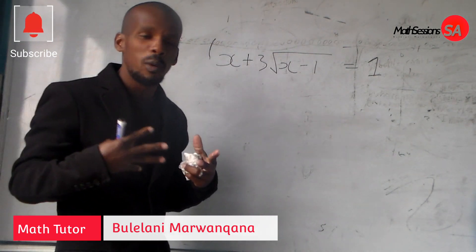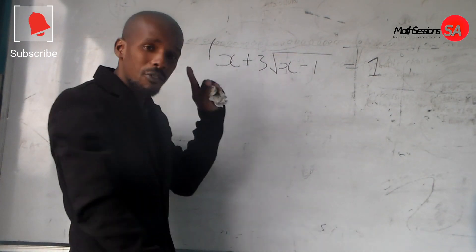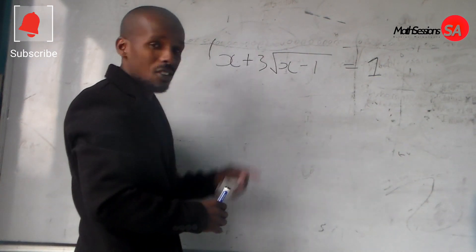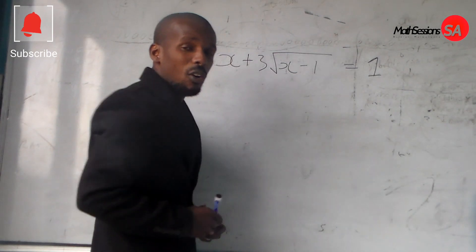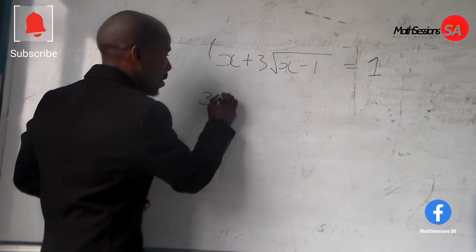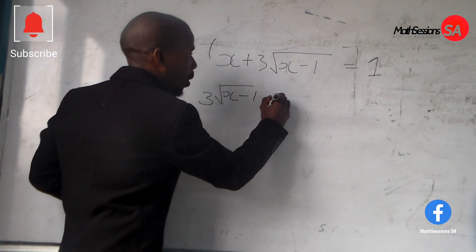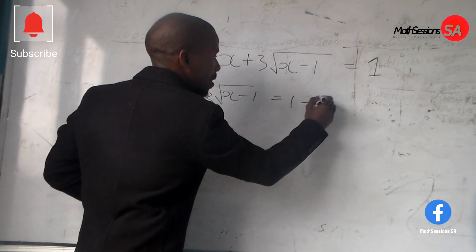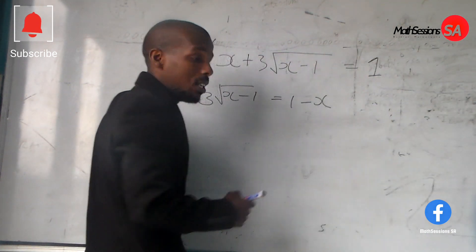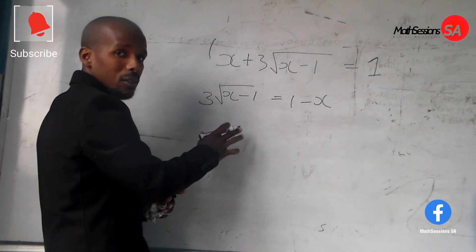First things first, we look for the problem. What is the problem with this equation? The first problem is this x right here. We take this x to the other side of the equal sign, and we are going to be left with 3 square root of x minus 1 equals 1 minus x. Because the x here is positive, when it goes to the other side it is going to change sign — it is going to be negative.